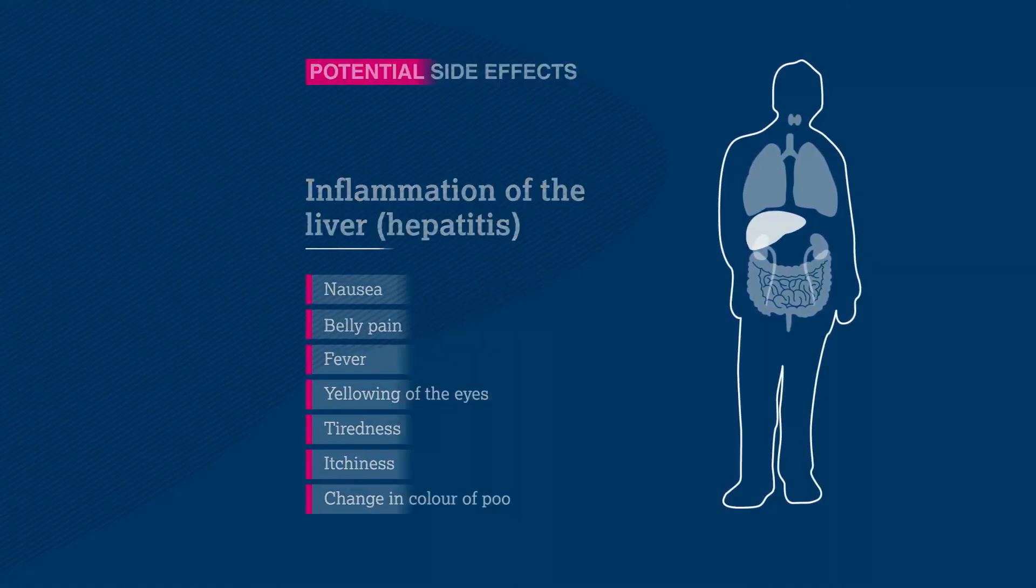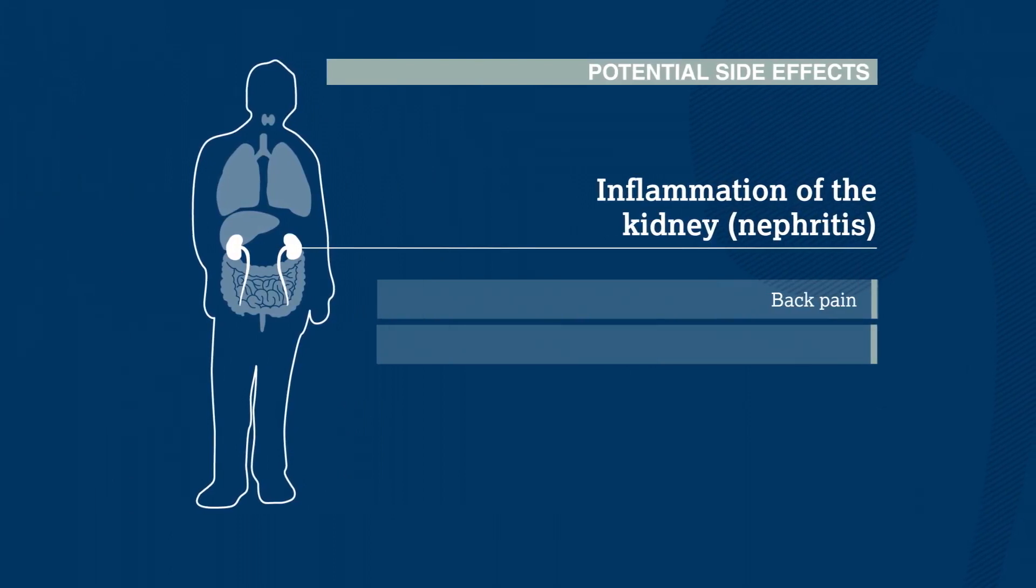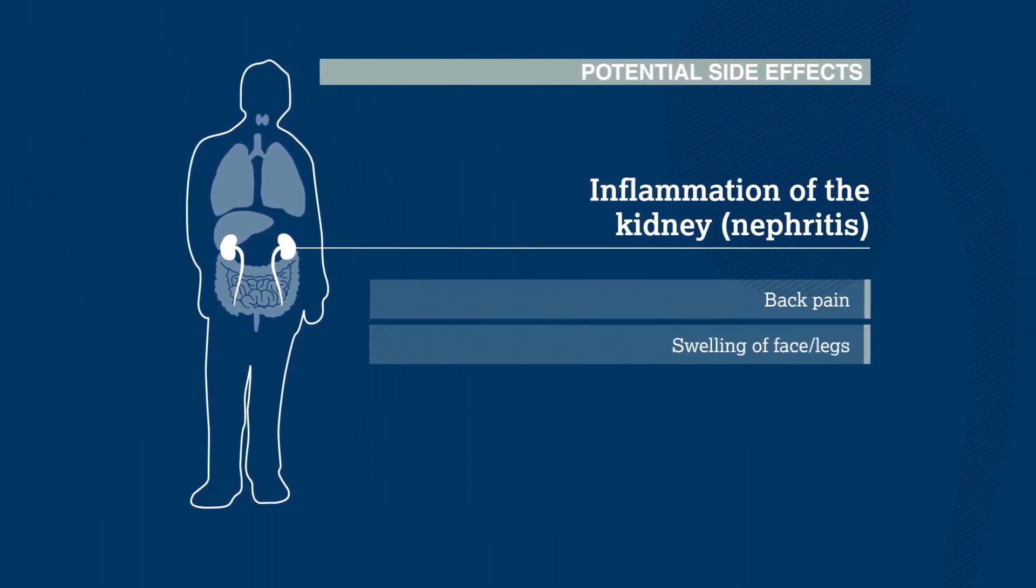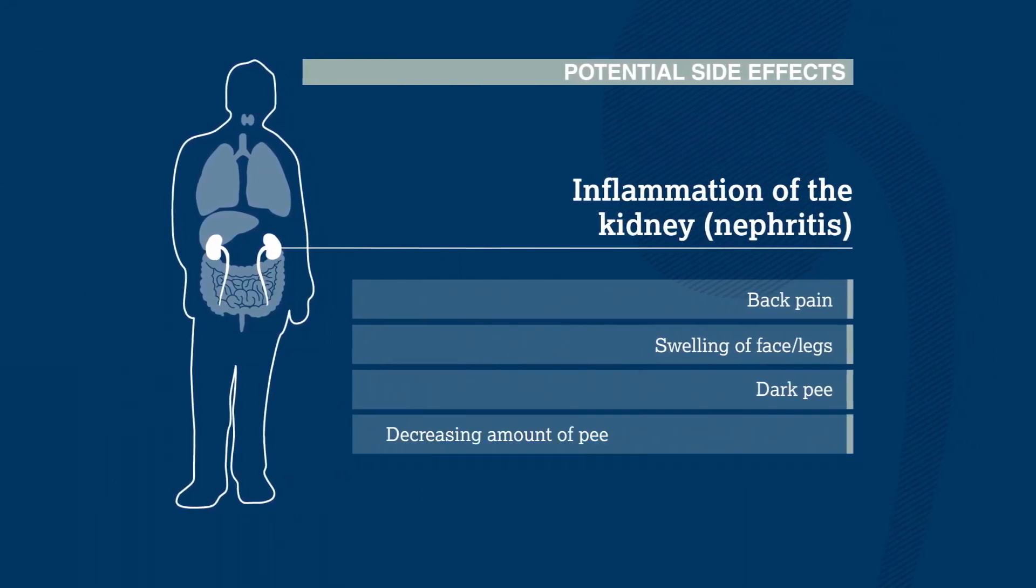If the kidneys are involved, patients may have back pain and swelling of their face or legs. They may also notice that their urine is much darker than usual, or that they're urinating more frequently.